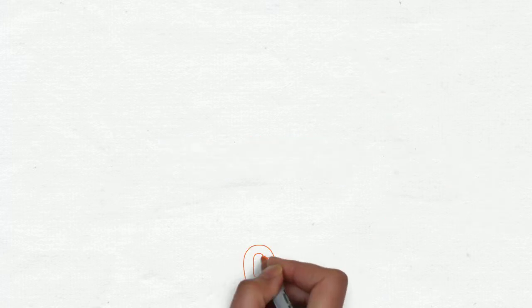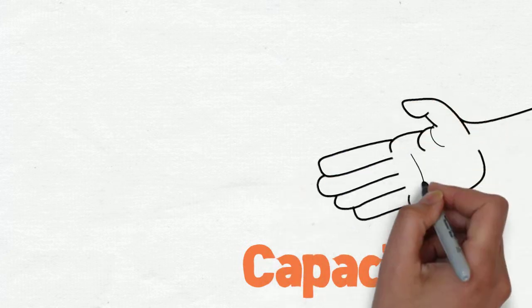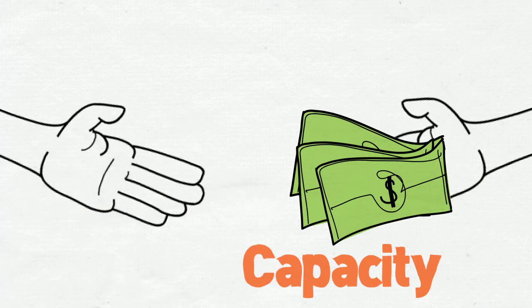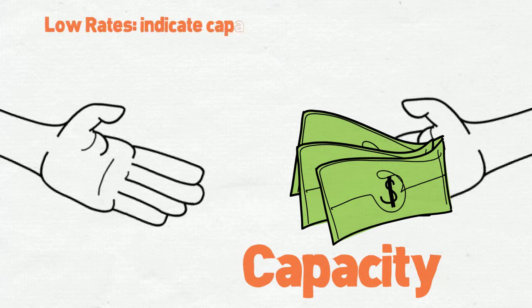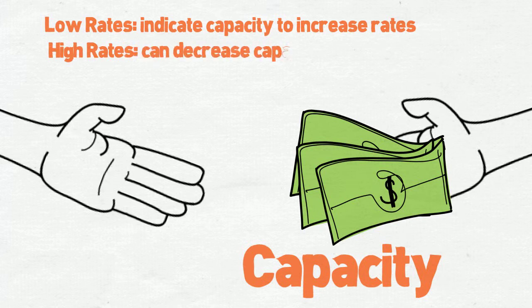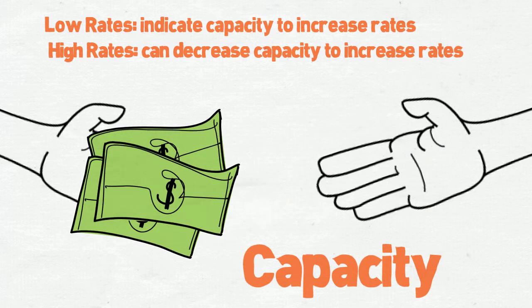The second credit rating characteristic of a financially resilient utility is capacity. Credit rating agencies are looking for evidence of a utility's capacity to increase rates and meet demand. Credit rating agencies assess how high a utility's rates are by comparing its rates to those in surrounding areas and with similar characteristics. It also compares its rates to customer demographics. Low rates, when considered in the context of service area income levels, indicate a capacity to increase rates. If a utility is deemed to have high rates, affordability pressures may arise that could significantly decrease a utility's capacity to increase rates to the levels that they need.